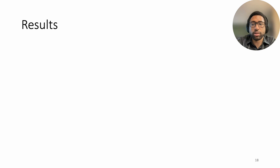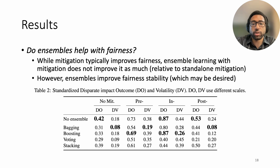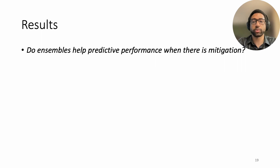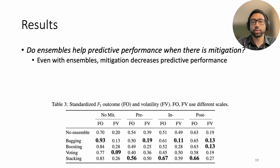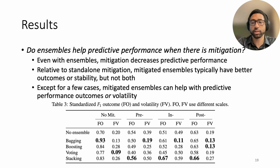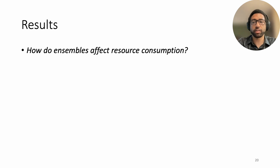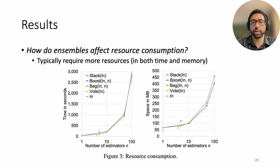With this standardization approach, we can now answer our key research questions. First, do ensembles help with fairness? We find that ensemble learning with mitigation does not typically improve fairness relative to standalone mitigation, but ensembles do improve stability, which may be desired depending on the use case. Next, do ensembles help with predictive performance when there is mitigation? We find that even with ensembles, mitigation decreases predictive performance. Additionally, relative to standalone mitigation, mitigated ensembles typically have better outcomes or stability, but not both — they can usually only help with one or the other. Lastly, how do ensembles affect resource consumption? We find that ensembles with more estimators typically require more resources in both time and memory than their smaller counterparts.